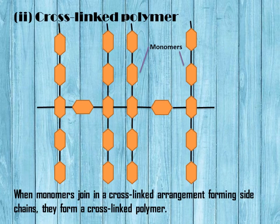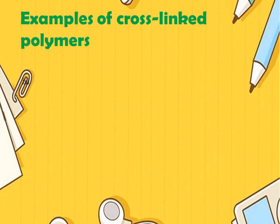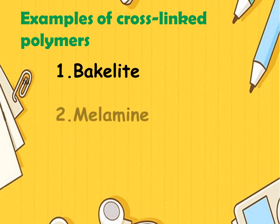Cross-linked polymer: When monomers join in a cross-linked arrangement forming side chains, they form a cross-linked polymer, as shown in the diagram above. Examples of cross-linked polymers include Bakelite and melamine.